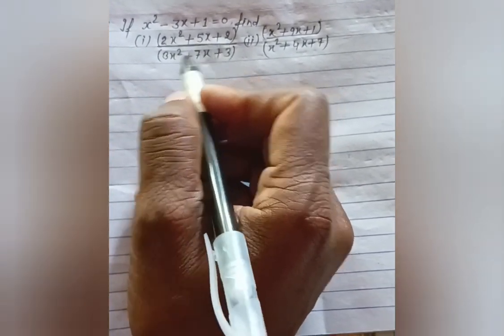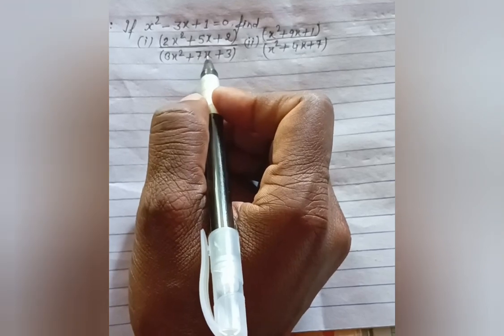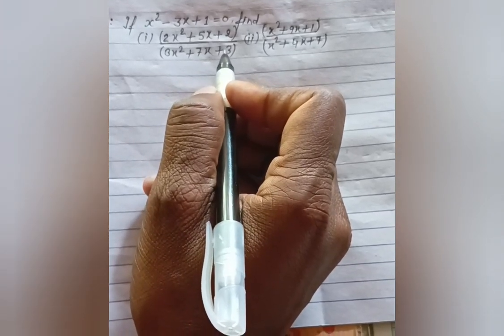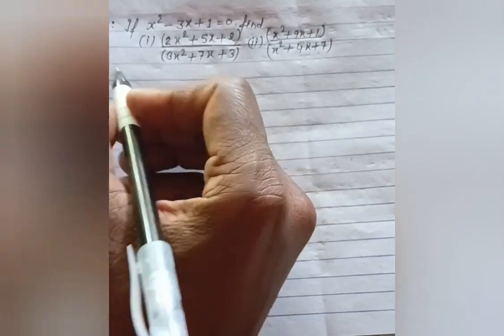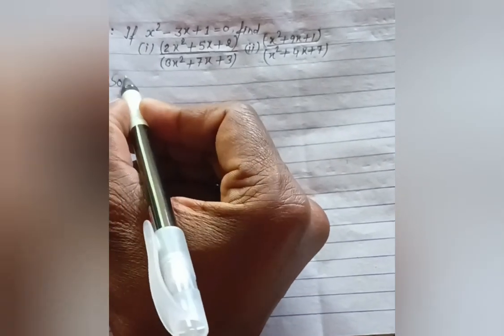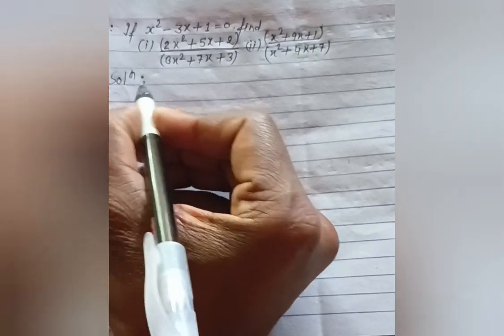+ 5x + 2 divided by 3x² + 7x + 3. There's a second question too, but I'm going to solve the first question now.